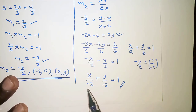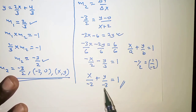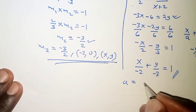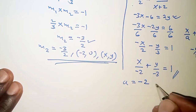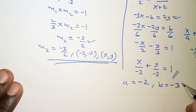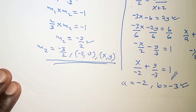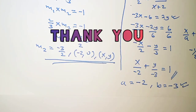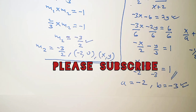That means the x-intercept is negative 2 and the y-intercept is negative 3. So a equals negative 2 and b equals negative 3, and we have stated the values of a and b as required. Thank you for watching — see you in the next video.